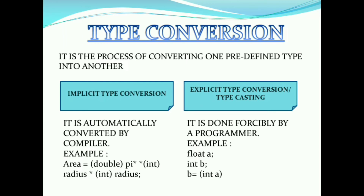That is called type conversion — for example, implicit type conversion and explicit type conversion, also known as typecasting. In the previous video I told you that data types and their types are very important, so this is very important for class 9. There are two types: implicit type conversion, which is done automatically by the compiler, and explicit type conversion. For example, area equals double pi times int radius — the data type is automatically converted.